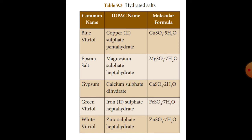This is copper(II) sulfate pentahydrate. 'Penta' means 5. The formula is CuSO₄·5H₂O — copper sulfate pentahydrate.